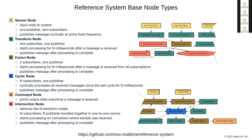The next base node type is the command node — essentially the last node in the system. You can think of it like the speedometer on your car: the gas pedal is the input, the car speeds up, and the needle increases showing you what's happened. In our reference system, this node prints out the statistics calculated inside the system — like dropped messages and latencies — which I'll cover in a bit.